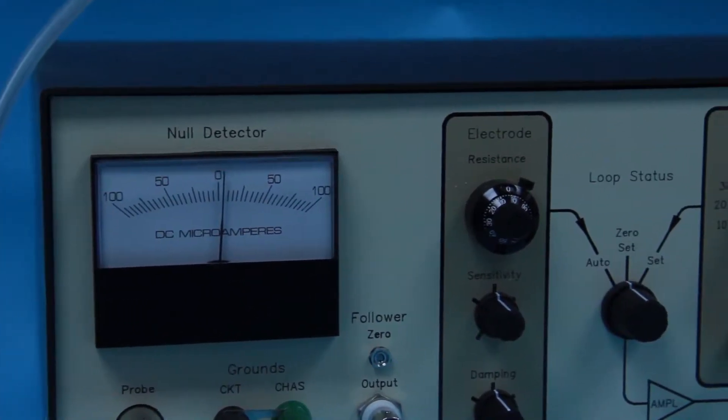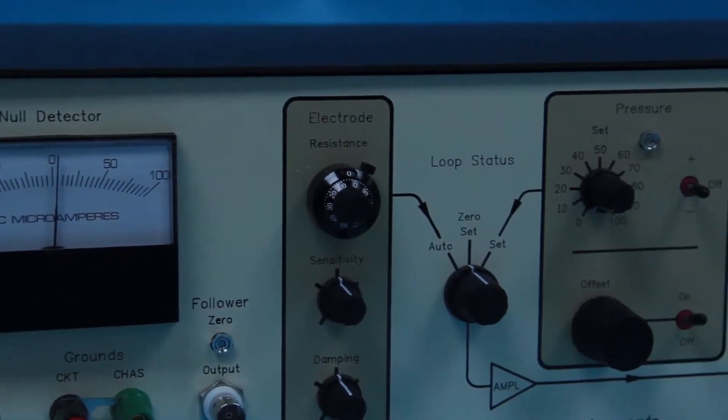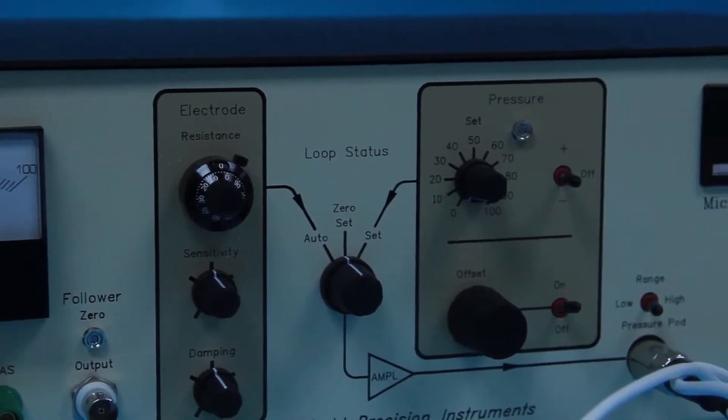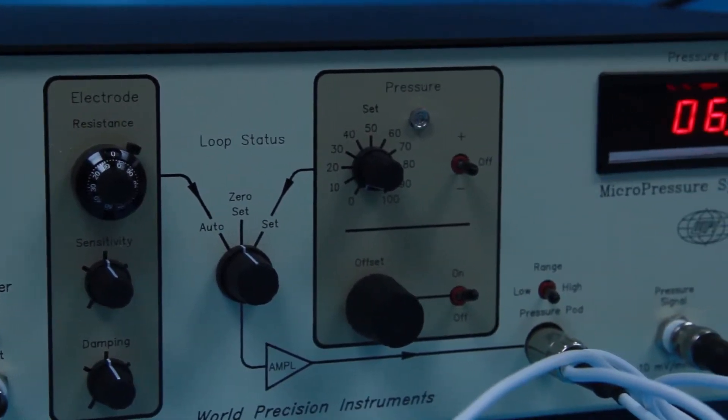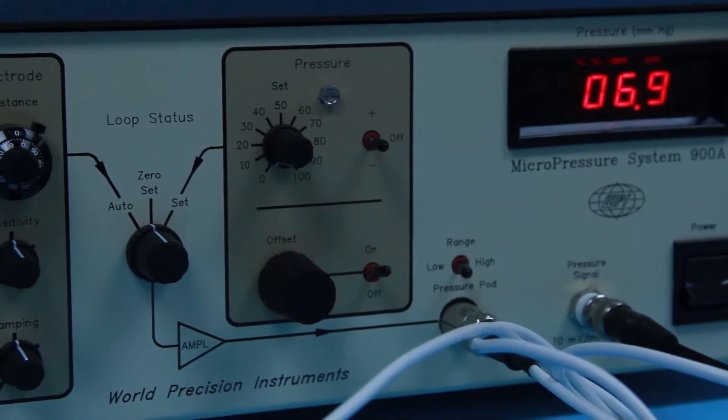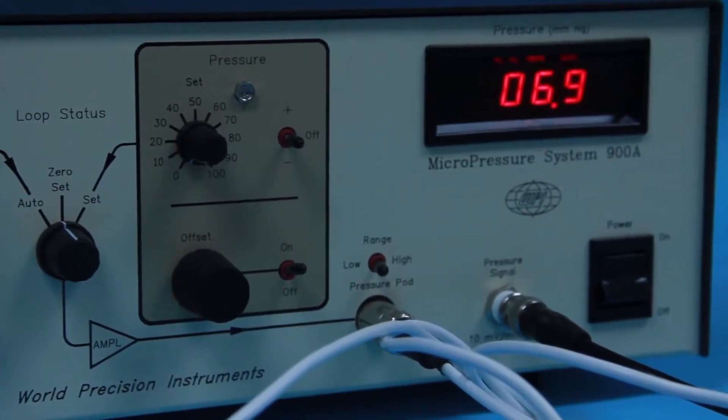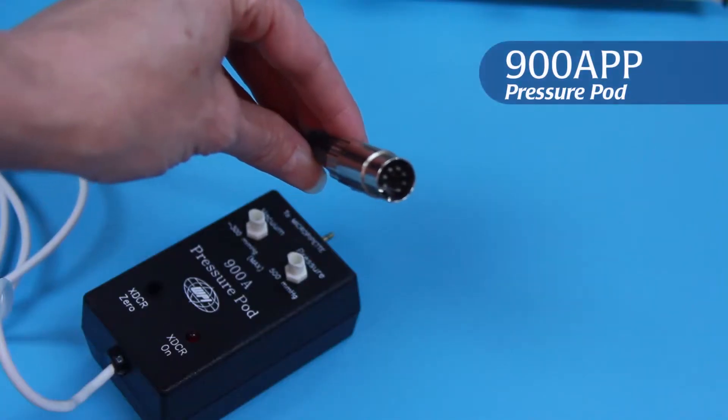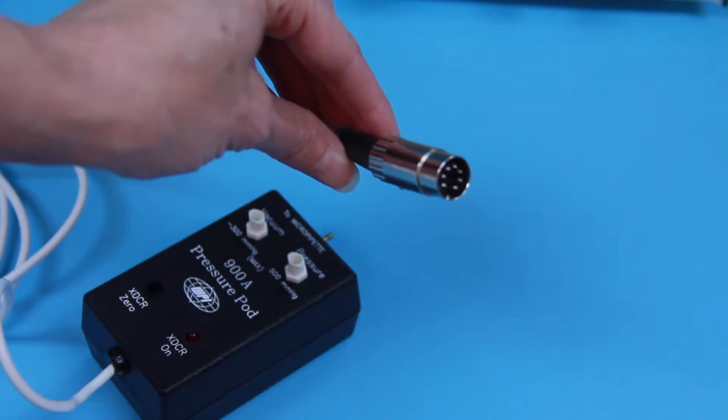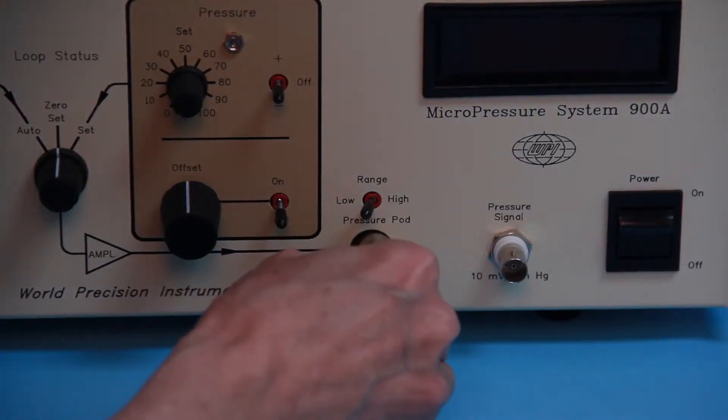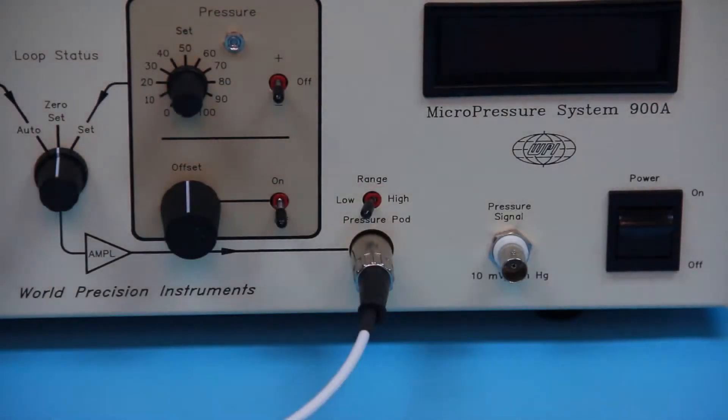WPI's model 900A micropressure system is designed to measure pressures from minus 200 to plus 400 millimeters of mercury in small blood vessels, cells, and other electrolyte-filled microcavities. Connect the 7-pin cable on the pressure pod to the connector labeled pressure pod on the front panel of the control unit.